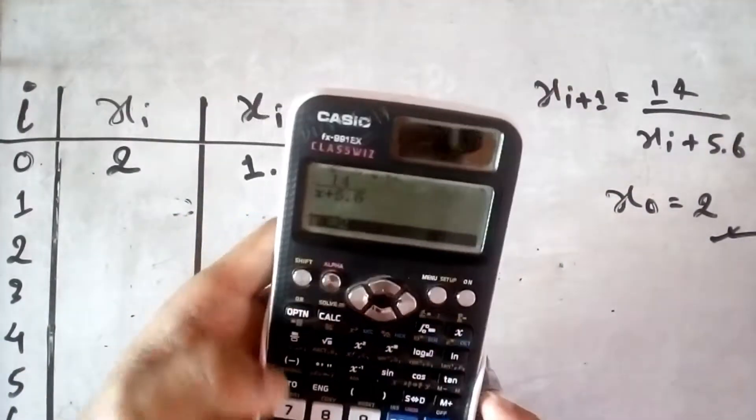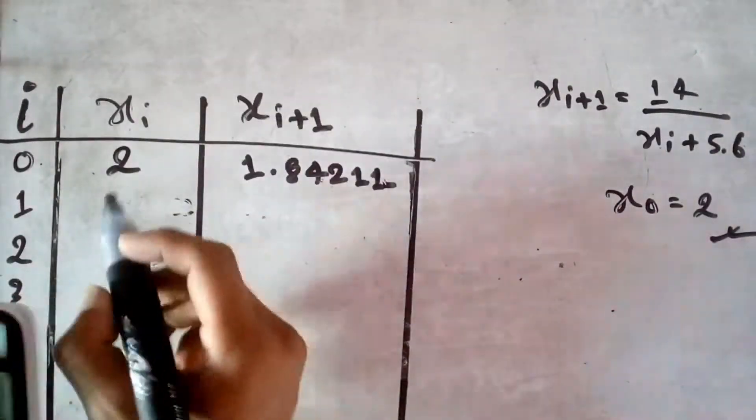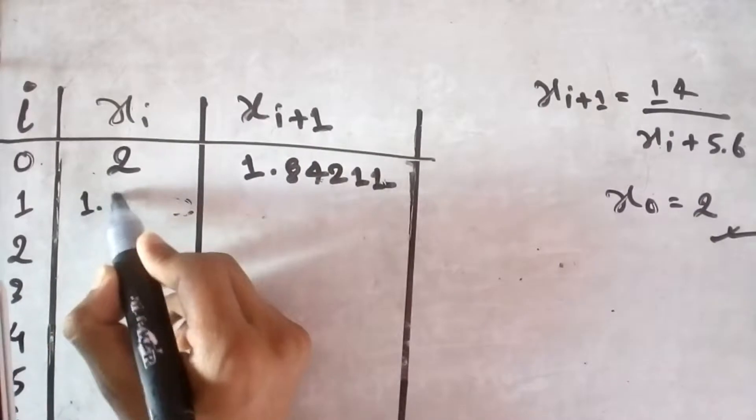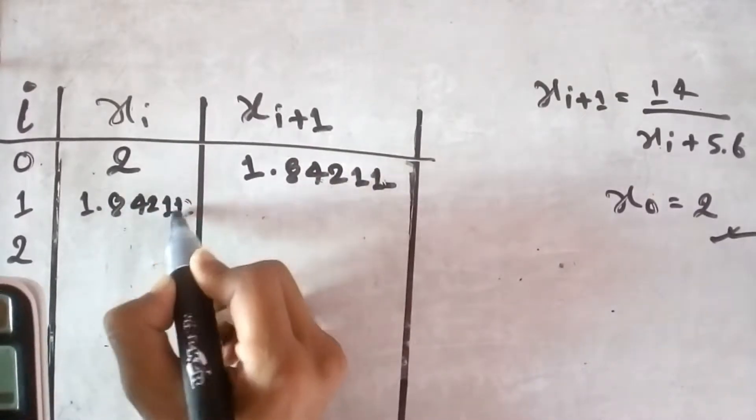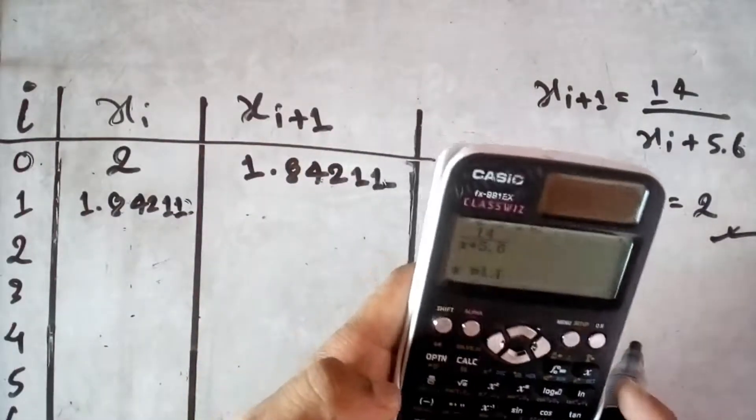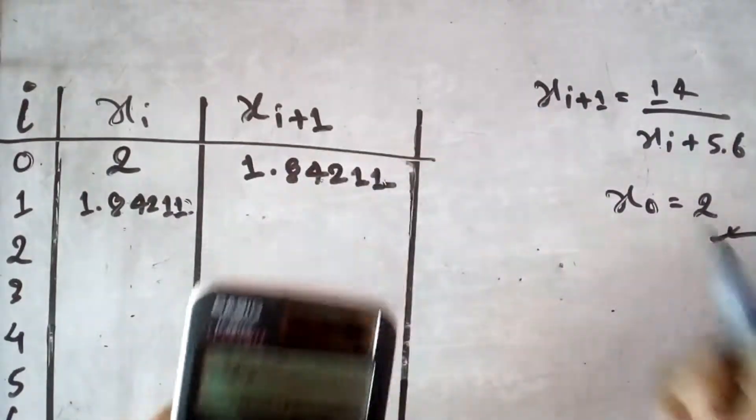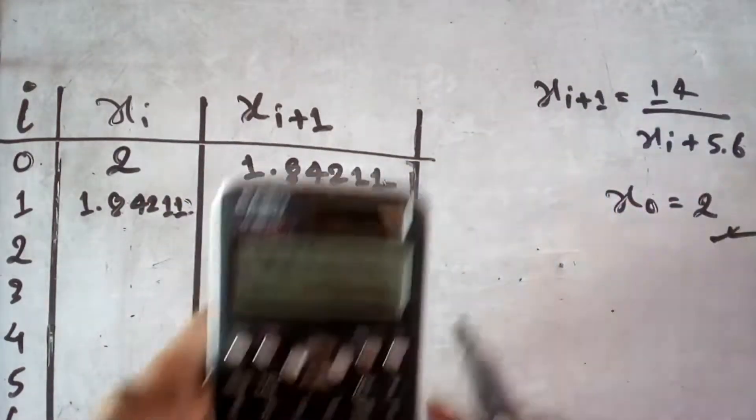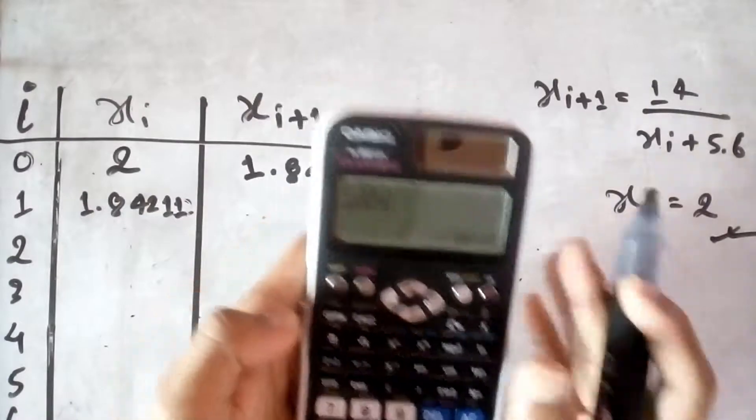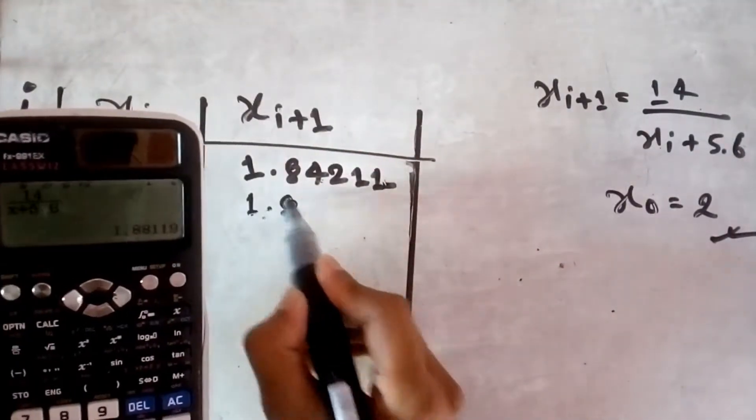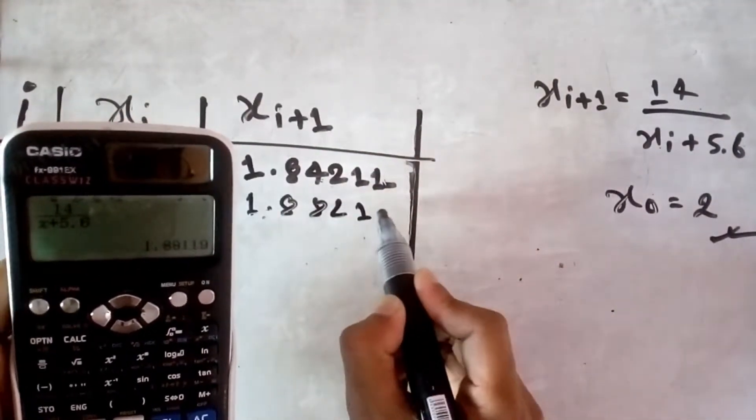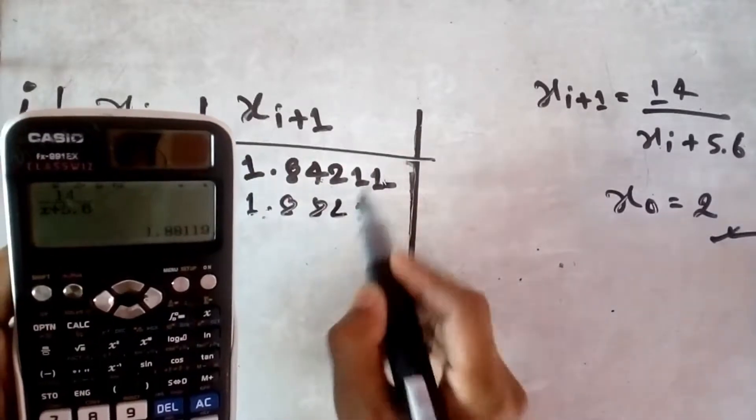Now 1.84211 will become your new value and you get another value, so it will become 1.88119.